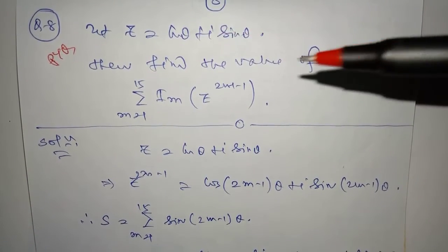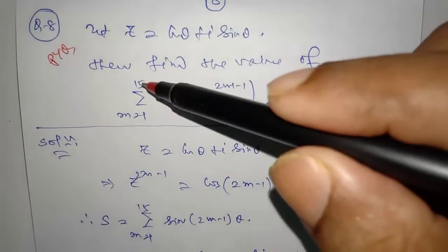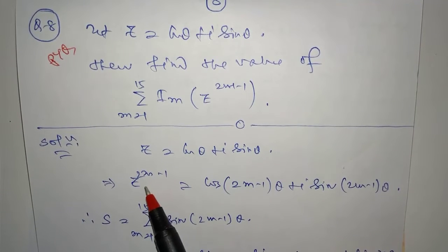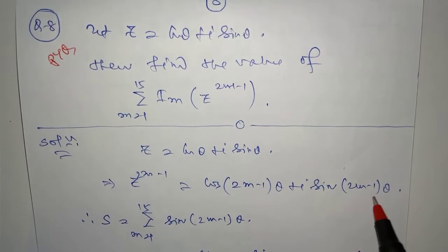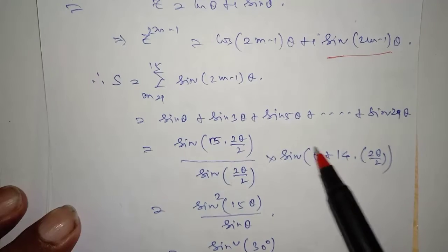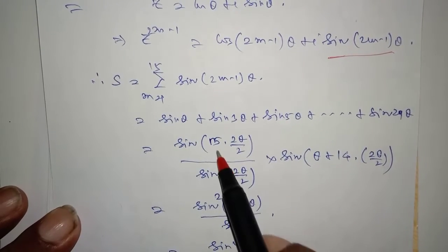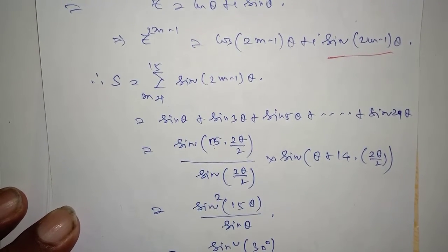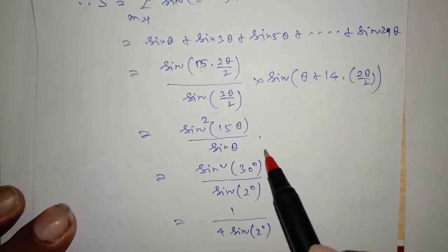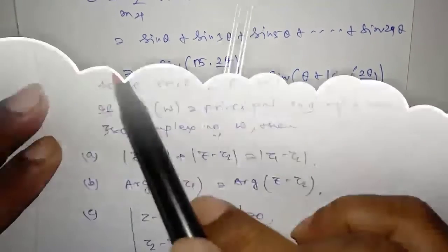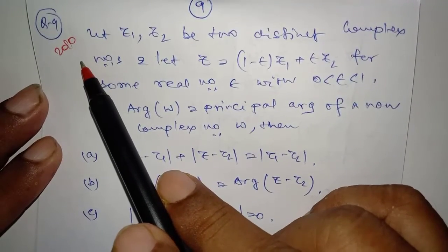Very important PYQ for JEE Mains and JEE Advanced. Z equals cos theta plus iota sin theta. Find the value of the sum from m equals 1 to 15 of the imaginary part of Z to the power (2m minus 1). The imaginary part of Z^(2m-1) is sin(2m-1)·theta. Using the formula for sum of sines: sin(n·beta/2) divided by sin(beta/2) times sin(alpha plus (n-1)·beta/2). Substituting theta equals 2 degrees, the result equals 1 divided by (4 sin 2 degrees).